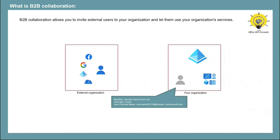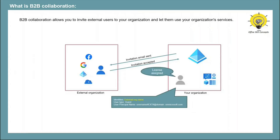When the administrator creates this user as a guest user, an invitation email will be sent to this user. The user will accept the invitation, and the identity type that was reflecting as domain.onmicrosoft.com will change to the name of the external organization. The administrator will then assign services or licenses to this user. When this user tries to access the services of your tenant, the authentication request will go to the external organization, and once authenticated, the user will be able to access your organization's resources.